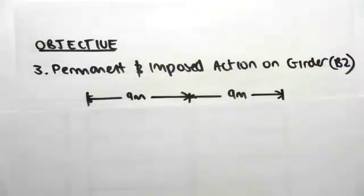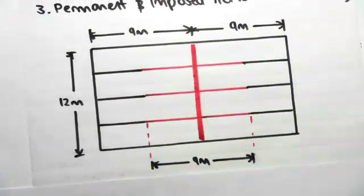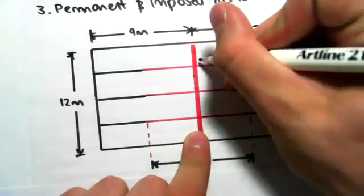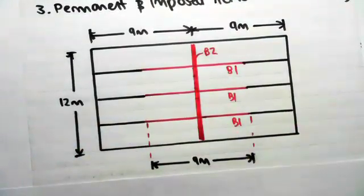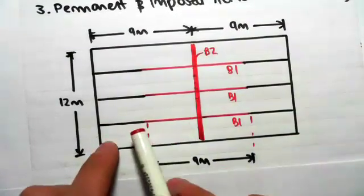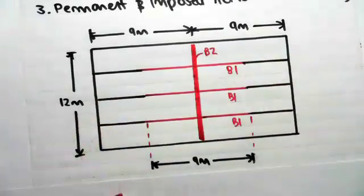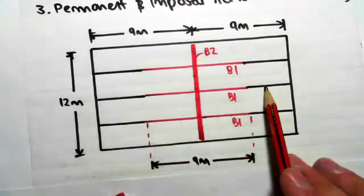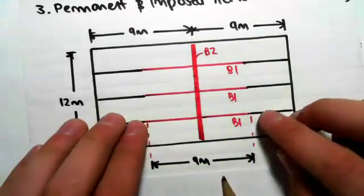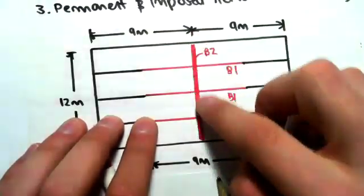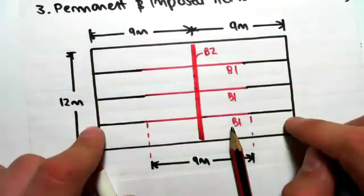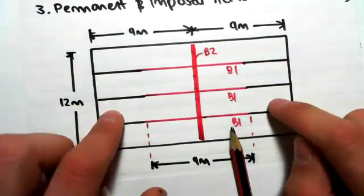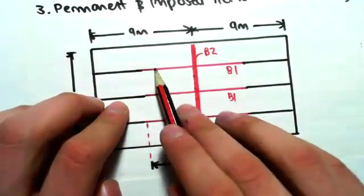I'm just going to draw a little diagram to get your head around what's going on. What I've drawn here is just the girder B2, this central girder. All these beams here are the B1 joists. This entire length of beam has been loaded, but the only amount transferring into the girder is what I've drawn in red — 9 meters of this joist will be transferring into this girder. The rest will be taken by the exterior girders.